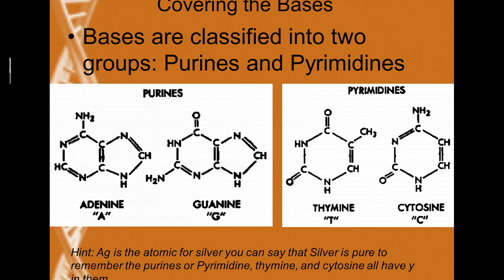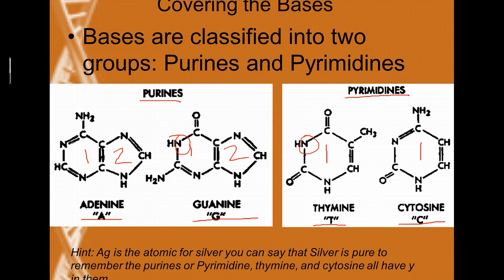There are two groups of bases, classified based upon their structure. They are the purines and the pyrimidines. The purines are adenine and guanine, abbreviated A and G, and the pyrimidines are thymine and cytosine, abbreviated T and C. The purines are a double-ringed structure, whereas the pyrimidines are only a single-ringed nitrogen base. They're nitrogen bases because they all contain nitrogen.